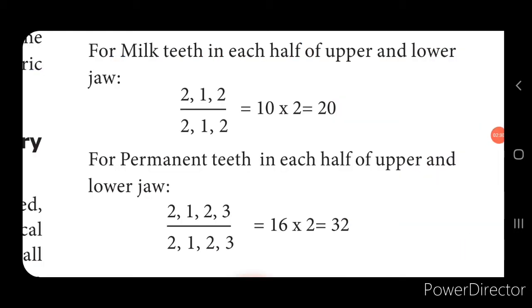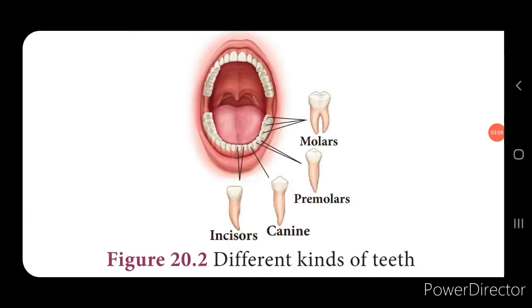The dental formula represents the number of different types of teeth in the upper and lower jaw. For milk teeth, the numerator represents the upper jaw and the denominator the lower jaw. The total milk teeth is 10 in upper and lower, so 10 × 2 = 20. For permanent teeth, there are 16 on each side of the upper and lower jaw, so 16 × 2 = 32. You can see in the picture the shapes of the different types of teeth and their placement in each half of the upper and lower jaw.